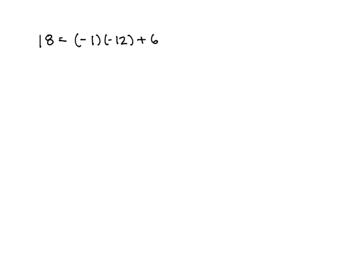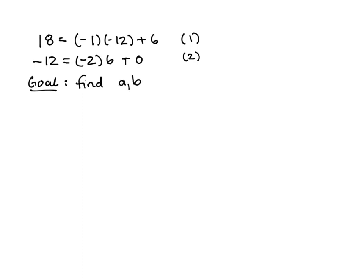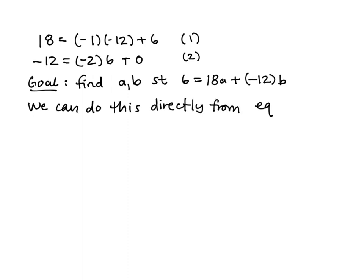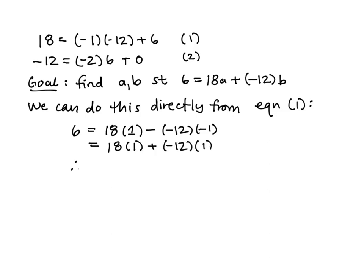Now on this slide I'm going to take equation one and equation two. From these I want to find integers a and b so that I can write six equals 18a plus negative 12b. Looking at equation one and solving for six, we get six is 18 times 1 minus 12 times negative 1, or 18 times 1 plus negative 12 times 1. So a and b are both 1. That's kind of the best case scenario where you hit upon your GCD in the first step.